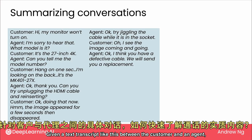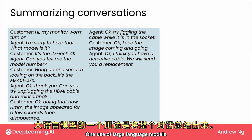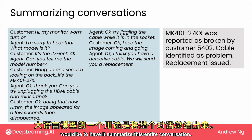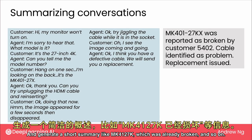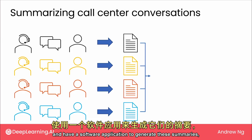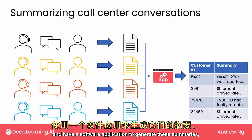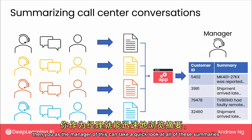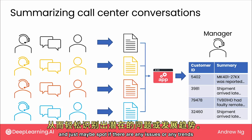Given a text transcript between a customer and an agent, what really happened in that call? One use of large language models would be to have it summarize the entire conversation and generate a short summary — for example, 'MK4127K, which report is broken,' and so on. If you take all of these text transcripts and have a software application generate these summaries, then as a manager you can take a quick look at all the summaries and spot any issues or trends you want to be aware of.